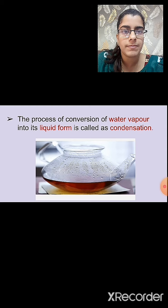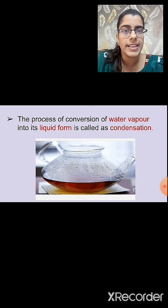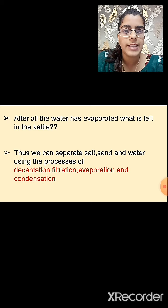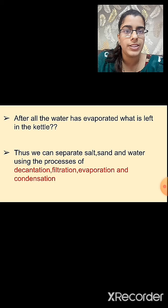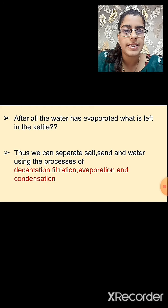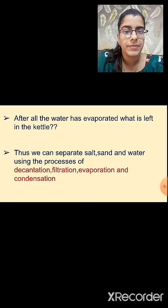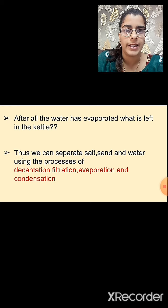In evaporation, liquid form gets converted into water vapour, so condensation and evaporation are opposite processes. In condensation, water vapour gets converted into liquid form. After all the water has evaporated from the kettle, the salt residue will be left behind. Thus, we separate sand, salt, and water using decantation or filtration to remove the sand, then evaporation and condensation to separate water from the salt.